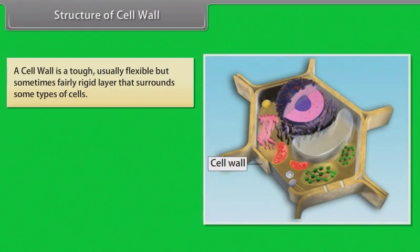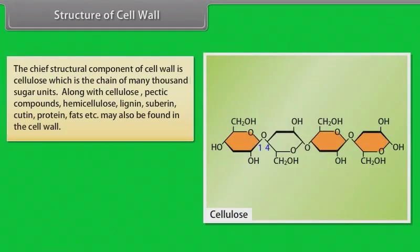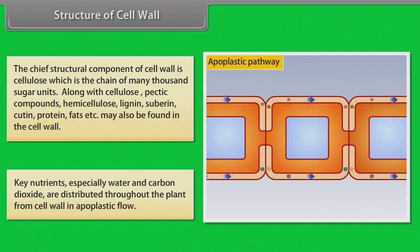Structure of cell wall: A cell wall is a tough, usually flexible but sometimes fairly rigid layer that surrounds some types of cells. It is located outside the cell membrane and provides structural support and protection, also acting as a filtering mechanism. Cell walls are found in plants, bacteria, fungi, algae and some archaea. The chief structural component is cellulose, which is a chain of many thousands of sugar units. Along with cellulose, pectic compounds, hemicellulose, lignin, suberin, cutin, protein, fats etc. may also be found. Key nutrients, especially water and carbon dioxide, are distributed throughout the plant from cell wall in apoplastic flow.